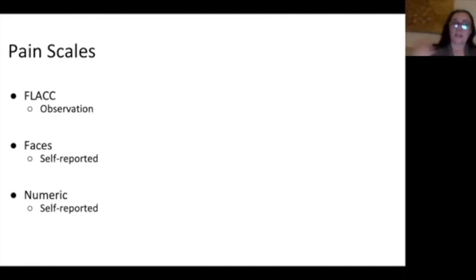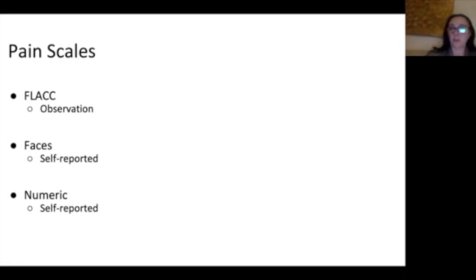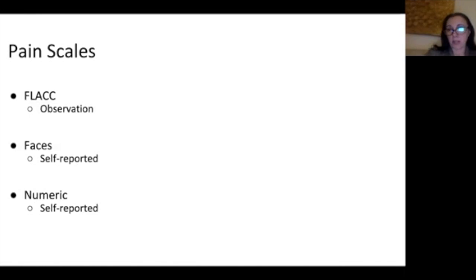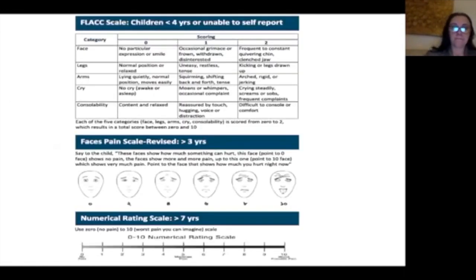What are some pain scales we can use in children? The most frequently used ones are FLACC, which is an observation scale, the Faces scale, which is a self-reported scale, and the numeric scale — same as you would use in adults — which is also self-reported. Let's go into a bit more detail on each.